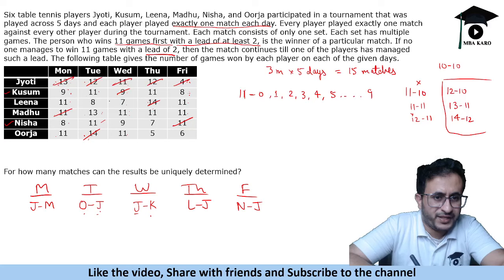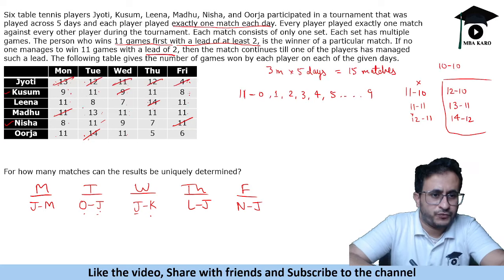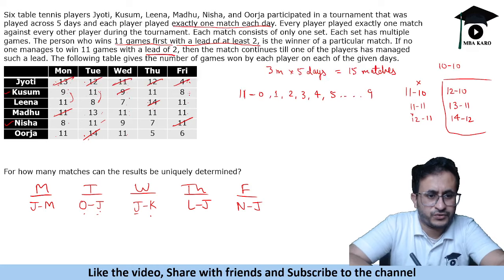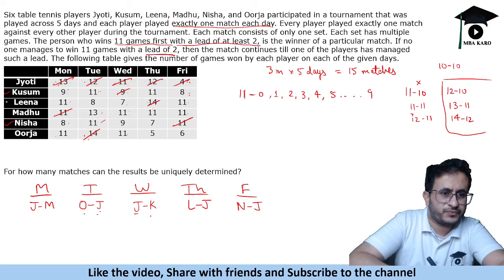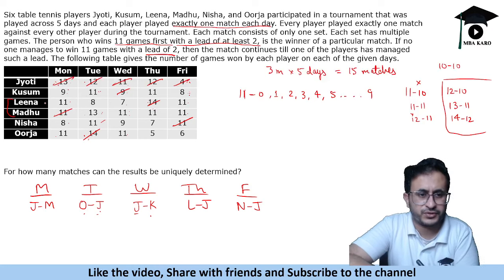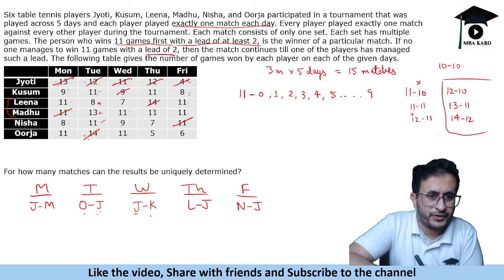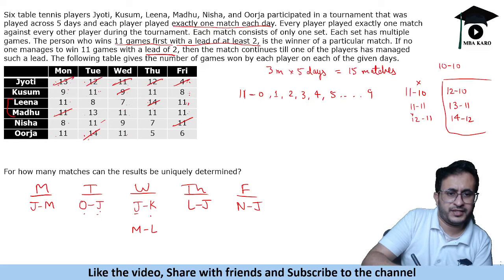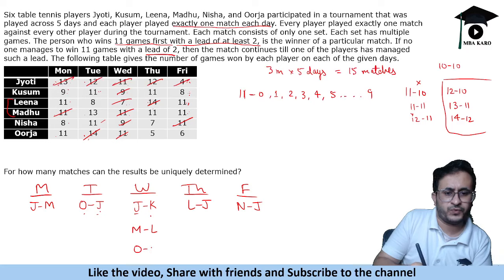Continuing to fill the schedule: Leena vs Madhu cannot happen Monday or Tuesday (11-11 is not a valid match score), so it must be Wednesday. That makes Wednesday: Jyoti vs Kusum, Leena vs Madhu (Madhu wins), and Urja vs Nisha. For Friday: checking Lina vs Urja — Monday is 11-11 (impossible), Tuesday impossible, Thursday impossible — so Leena vs Urja must be on Friday (11-6). The remaining Friday match is Madhu vs Kusum.